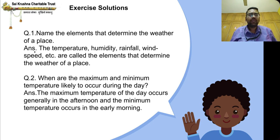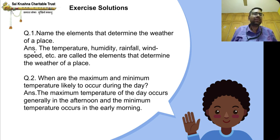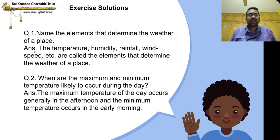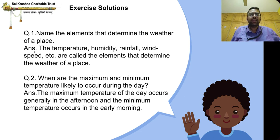Question 2: What are the maximum and minimum temperatures likely to occur during the day? Maximum means highest — so the highest temperature in the day is called maximum temperature. Minimum temperature means the lowest temperature in the day.